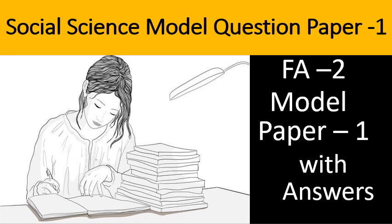Hello dear students, welcome to FA 2 Model Paper 1. This FA 2 is again, as usual, for 20 marks. First I present the question paper followed by the answers — watch till the end. This is a model paper. You can refer to these questions and prepare for other questions as well. Welcome to FA 2 Social Science Model Paper 1 — questions with answers.